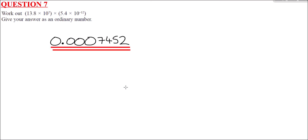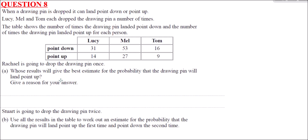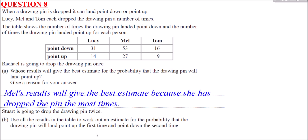Question 8 — probability. A drawing pin can land point down or point up. Lucy, Mel, and Tom each dropped it multiple times. Mel's total is 80 drops, Tom's is 25, and Lucy's is 45. The basic rule of probability is: the more times you repeat an experiment, the more reliable the data. Therefore, Mel's results give the best estimate because she has dropped the pin the most times.